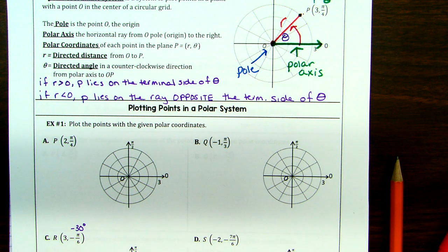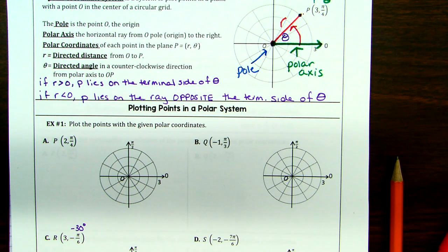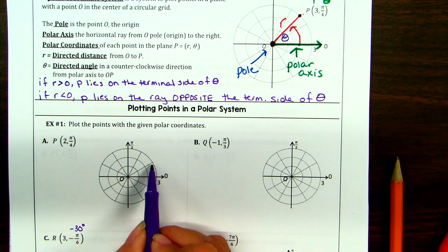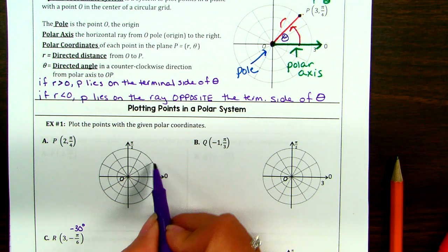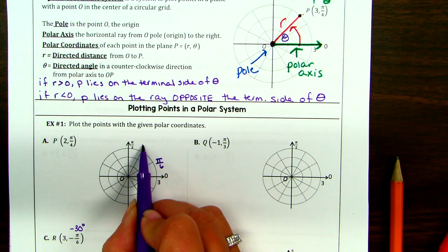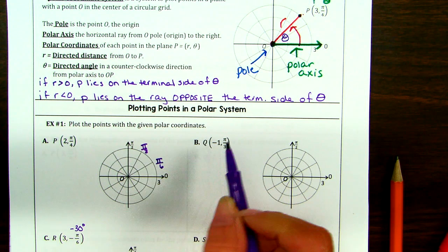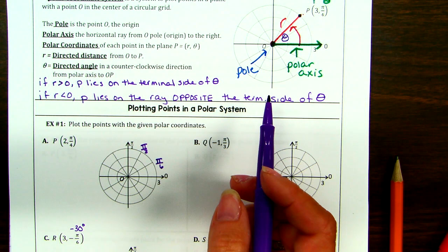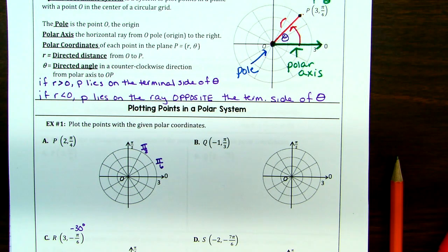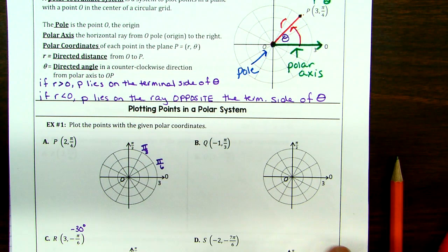We have three standard angles in each quadrant: denominator of six, denominator of four, denominator of three. There's 30, 15, 15, 30 — so this is pi over six and this is pi over three. Where's pi over four? Right in the middle. They didn't give us a line for it, but just like graphing 1.5 on a rectangular plane — you're in between two lines. We're going to put pi over four right in the middle.